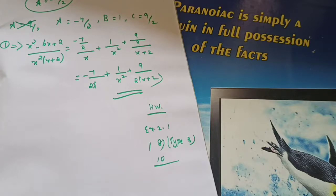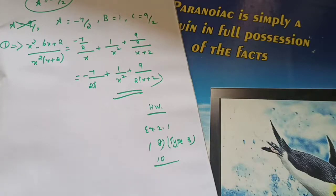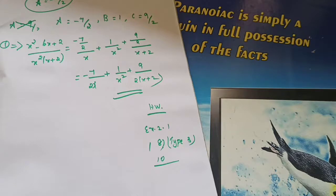Please take down your class works. Put the heading Type 3. One example problem I taught you today — copy that down. Then Exercise problems 6 and 7 which I taught now — take those down. After completing that, do problems 8 and 10 as home assignments. Section 2.1 is over. I hope you all understand. If you have any doubts, you can ask me and I will clear them.